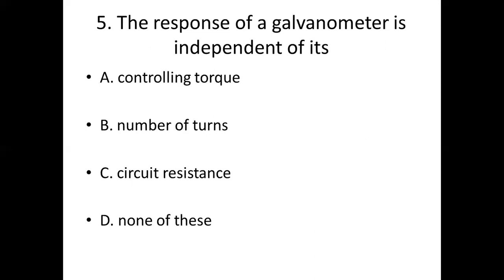Fifth bit. The response of a galvanometer is independent of its: Option A, controlling torque; Option B, number of turns; Option C, circuit resistance; Option D, none of these. Option C, circuit resistance.